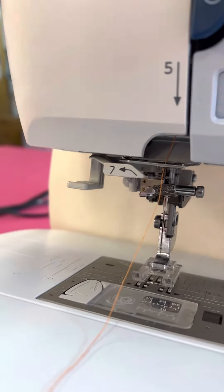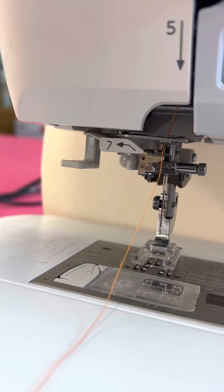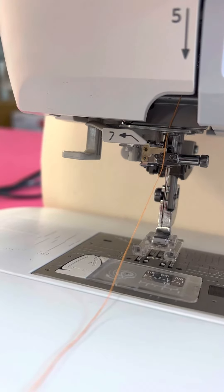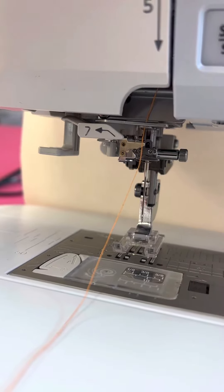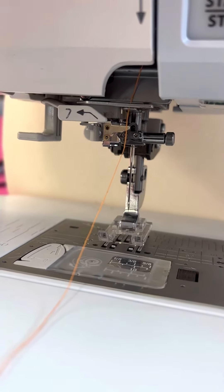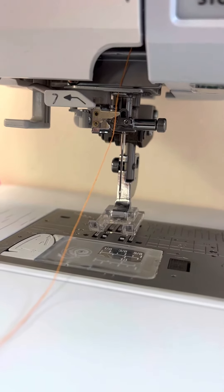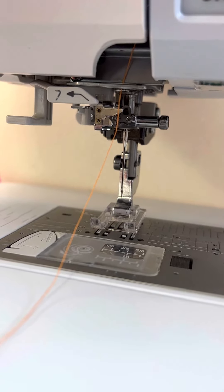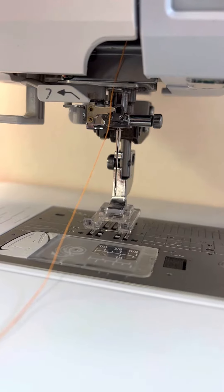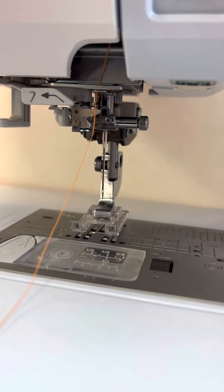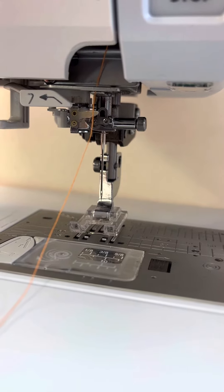First thing to say about needle threaders in general is that they're very susceptible to bent needles. So if there's any hint of a problem with the needle threader, first thing to do is change the needle, not to check it, because you really won't be able to see any deviation. Any very small deviation could be affecting the needle threader. It's best to just change it for a brand new needle, and size is important.